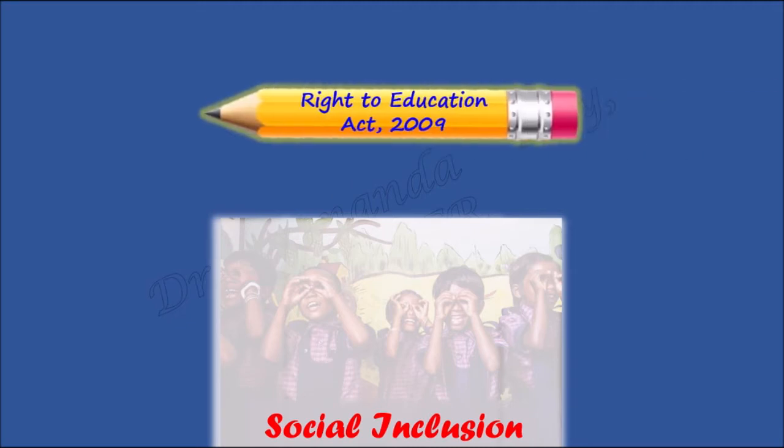We begin with social inclusion. Students coming from socially disadvantaged backgrounds are educationally deprived. In the Indian context, the Right to Education Act of 2009 has given such students the opportunity to be educated in affluent schools to get good quality education. Teachers face challenges trying to include such students into their classrooms, especially making the other students accept them. Here are some ideas that can help in social inclusion of students coming from diverse backgrounds.